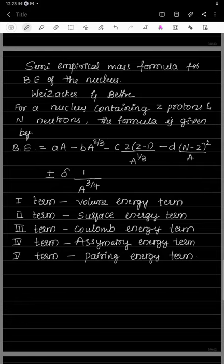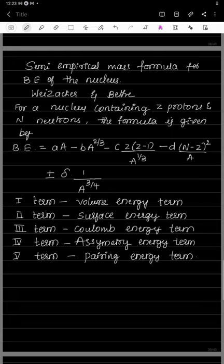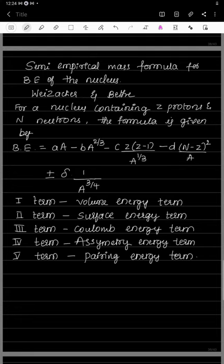Welcome students. In the last class we studied the salient features of the liquid drop model. The next part is the extension of the liquid drop model, which we call the semi-empirical mass formula. With the help of the liquid drop model we can find the binding energy of the nucleus. Binding energy is the energy that holds nucleons inside the nucleus, irrespective of charge. In other words, it is the amount of energy required to separate the nucleons from the nucleus.